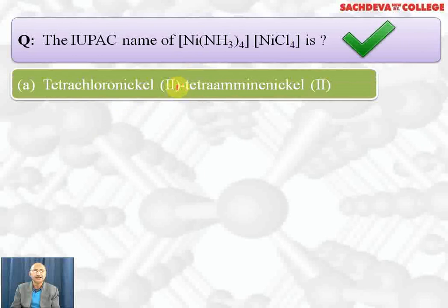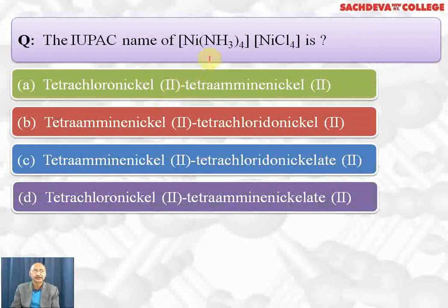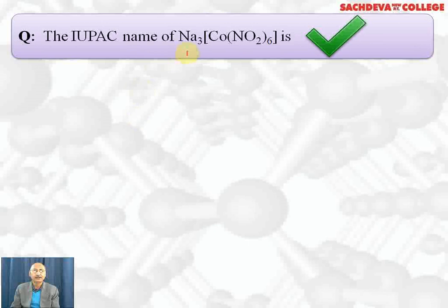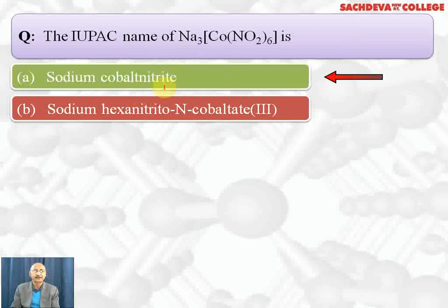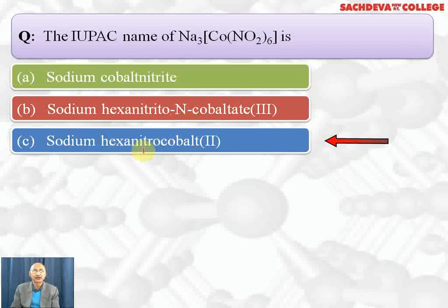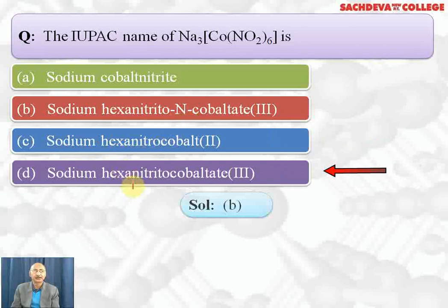For the IUPAC name of the complex, the correct answer is C: tetraamine nickel(II) tetrachloridoferrate(II). For the complex sodium cobalt nitrite (common name), the correct IUPAC name is sodium hexanitrito-N-cobaltate(III). The complex ion is negatively charged, so the suffix '-ate' is used. The oxidation state: +3 + x − 6 = 0, so x = +3. Therefore cobalt is in the +3 oxidation state.